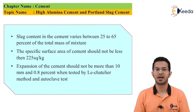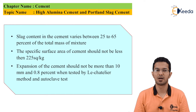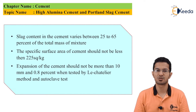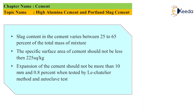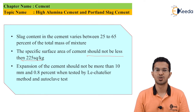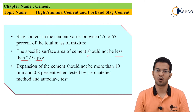The cement has a high volume of slag, so slag plays an important role in the context of many properties. Slag content in the cement varies between 25 to 65 percent of the total mass of the mixture. The specific surface area of cement should not be less than 225 m²/kg. The expansion of cement should not be more than 10 millimetres and 0.8 percent when tested by the Le Chatelier method and autoclave test.